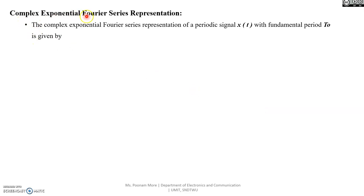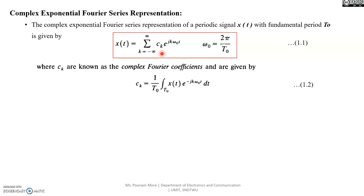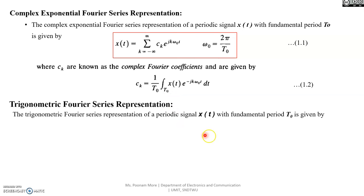First, we have the complex exponential Fourier series representation for a periodic signal x(t), given as the summation of ck times e raised to jk omega_0 t, where k takes values from minus infinity to infinity. Omega_0 represents the fundamental angular frequency, and ck is the complex Fourier coefficient, evaluated as 1 by T0 times the integration of x(t) times e raised to minus jk omega_0 t over a single time period.